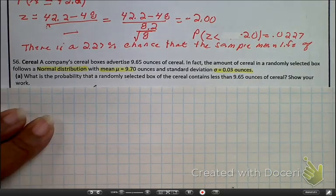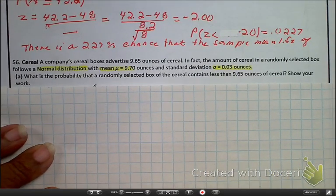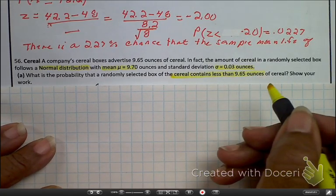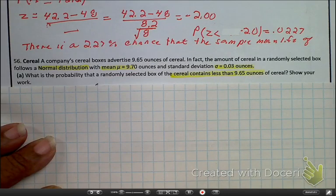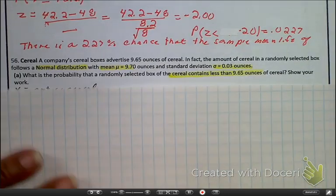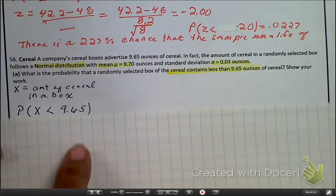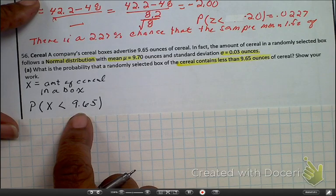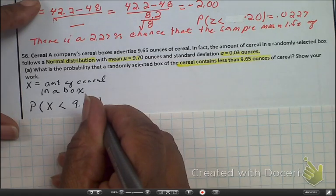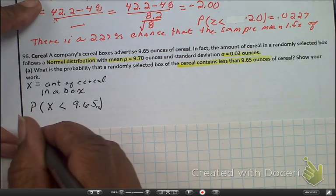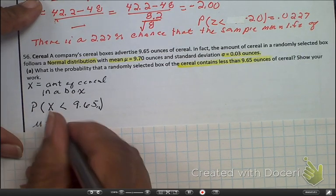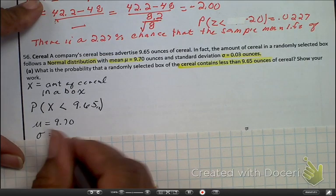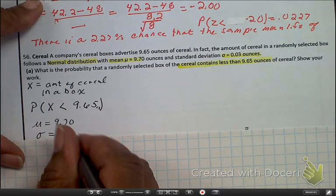So, what are we looking for here? We're looking for the probability that the cereal contents is going to be less than 9.65 ounces of cereal, the cereal box. Okay, so here I'm making x equals the box of cereal. This is where we're looking for the probability where x is less than 9.65 ounces. Okay, we have our mean to be 9.7 and our standard deviation for the population to be 0.03.